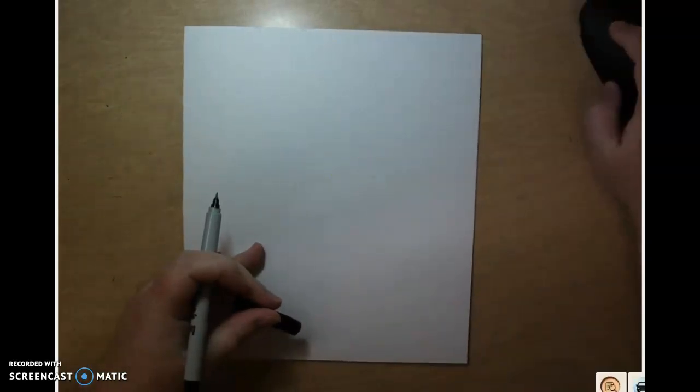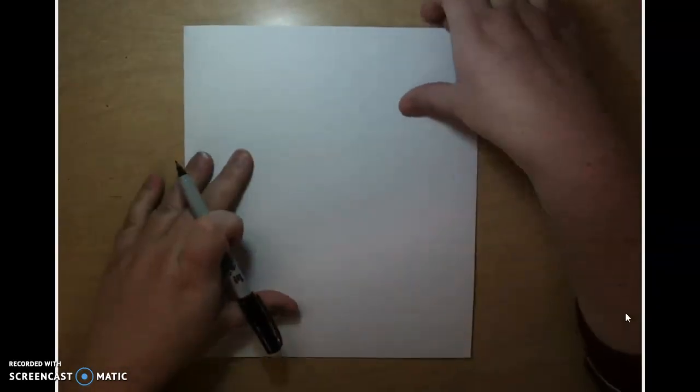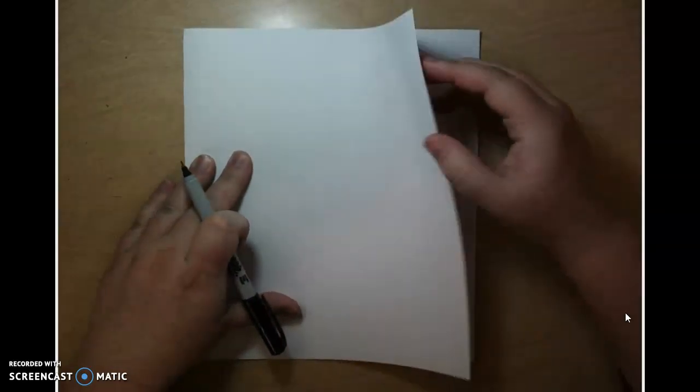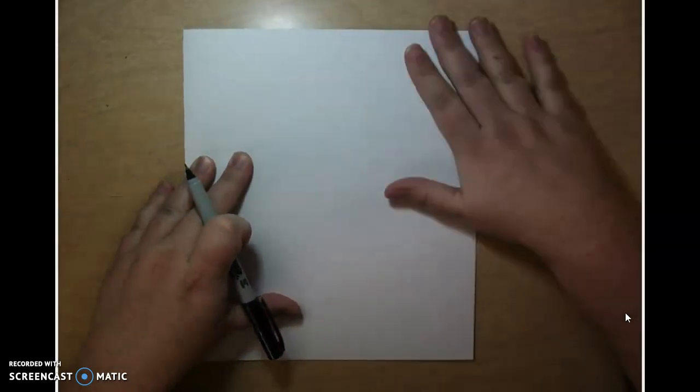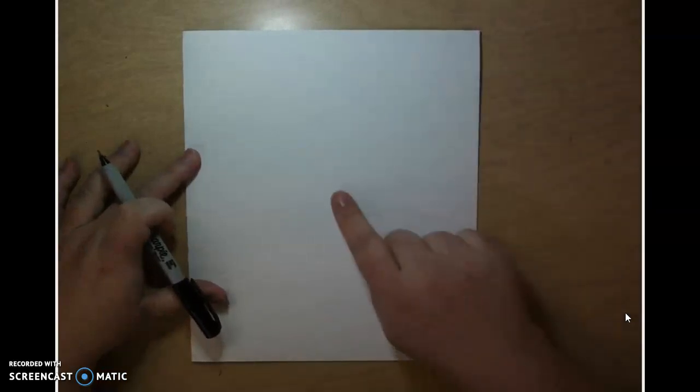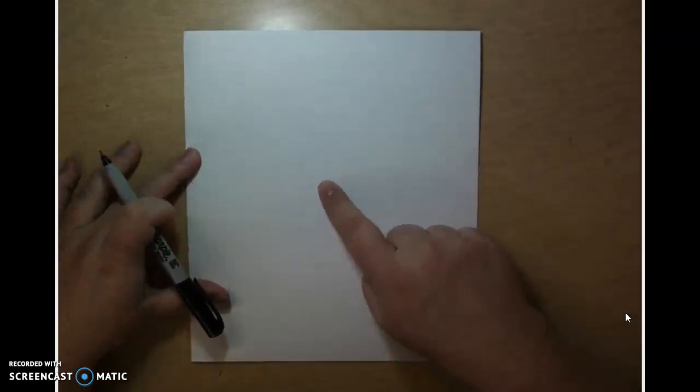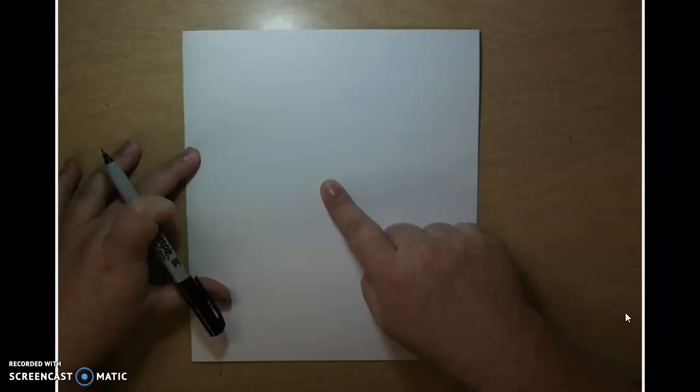And I'm going to move this off the screen. And remember, if you're using sharpie, you can always have a piece of paper underneath to protect your surface. Let's get started. We're going to find the center of our paper with our finger and we're going to drop it down just a little bit.